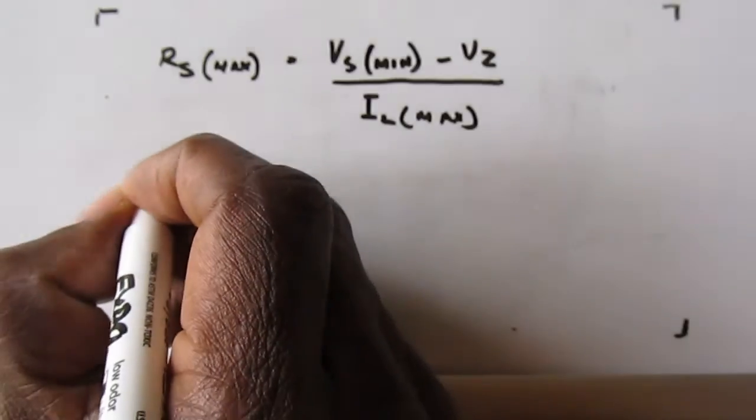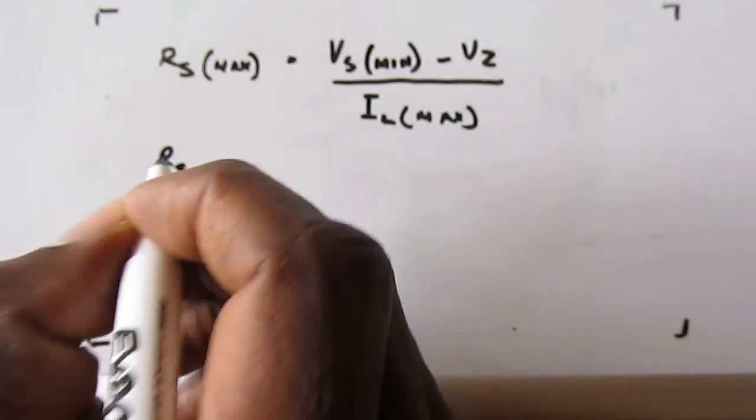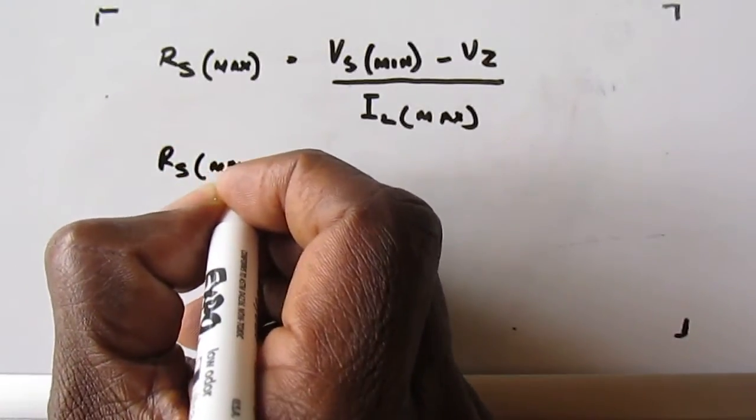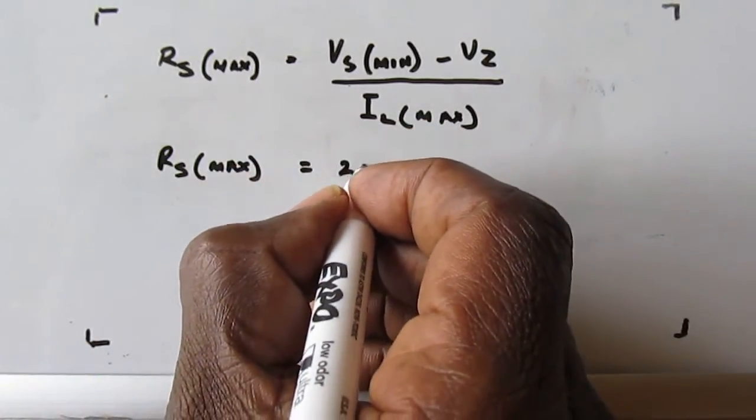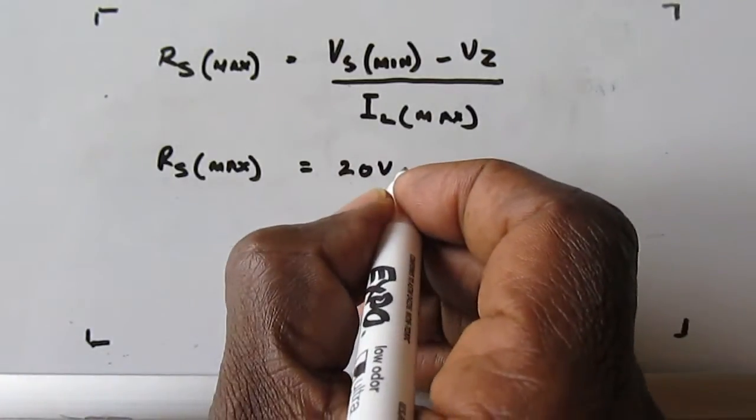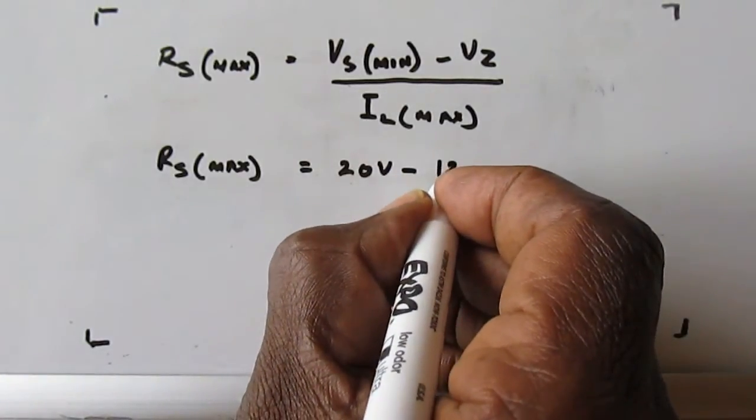Let's continue. RS max is equal to VS min. VS min is 20 volts. Minus VZ is 12 volts, the Zener diode voltage.